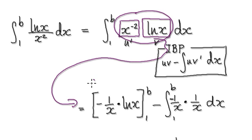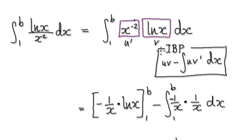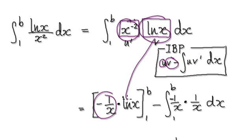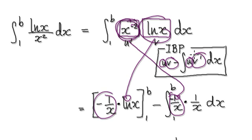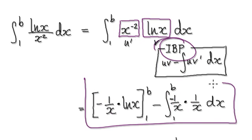Using integration by parts, that takes you to here. Integrating u prime gives you this, and differentiating v gives you this. So applying the integration by parts formula, which we've done many times before, that takes you to here.